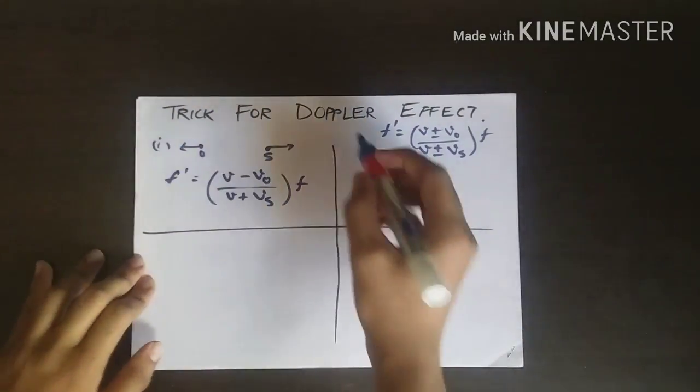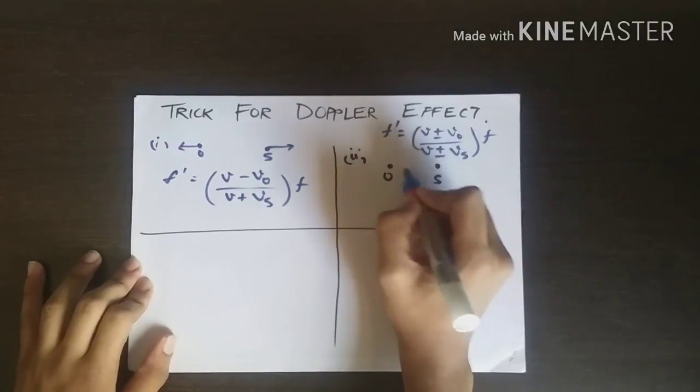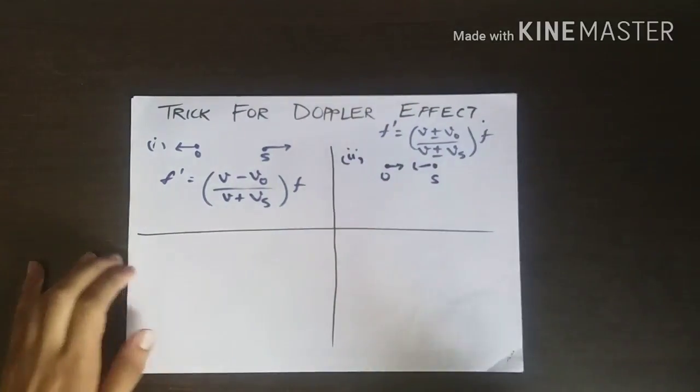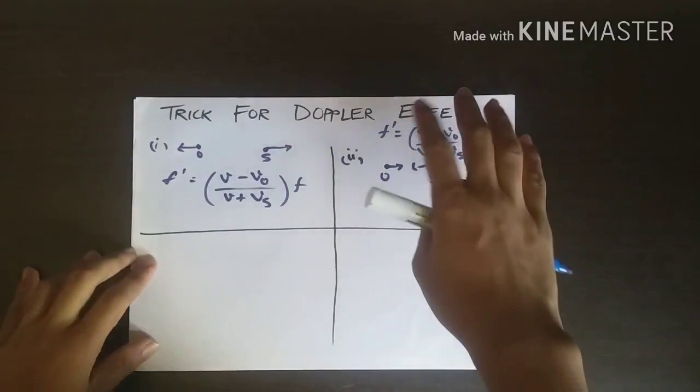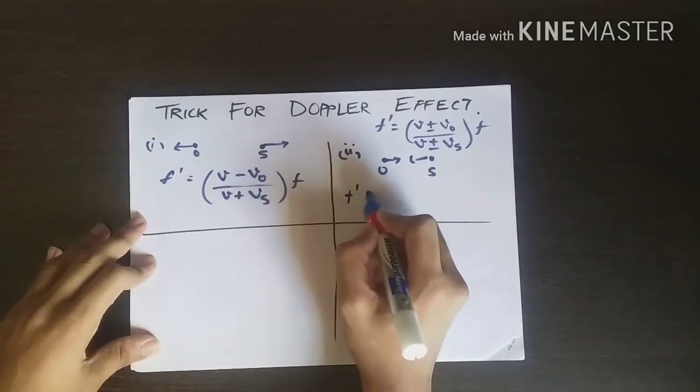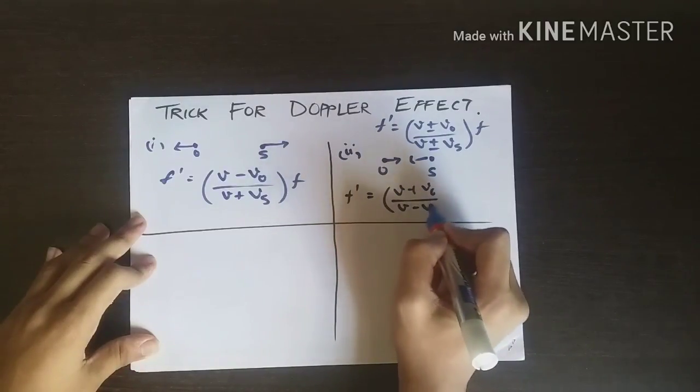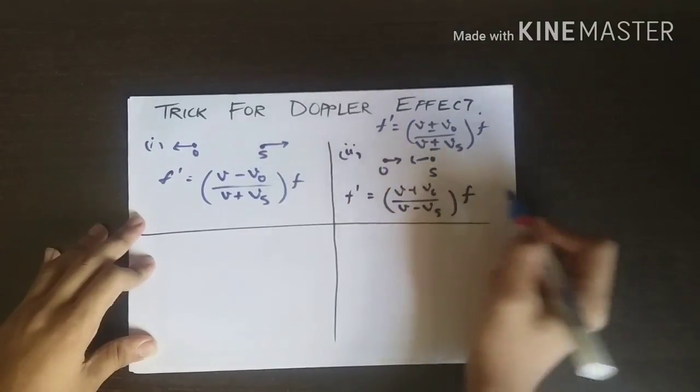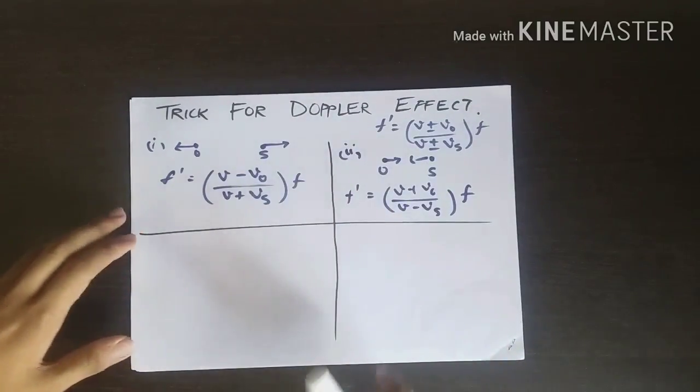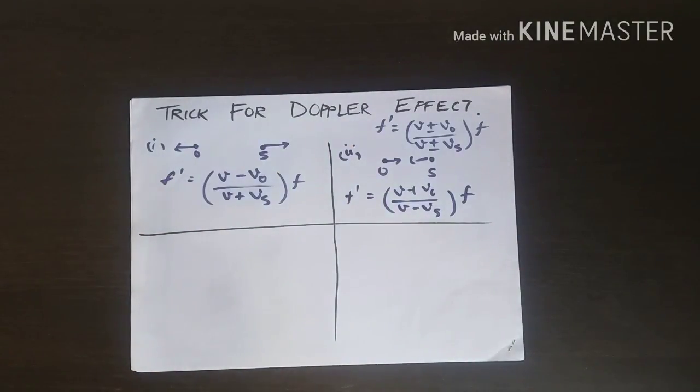The next case is that observer and source are moving towards each other. What do we do? We have to maximize this. F' = (V + V₀)/(V - Vₛ) × F. We are decreasing the denominator and increasing the numerator as much as possible.